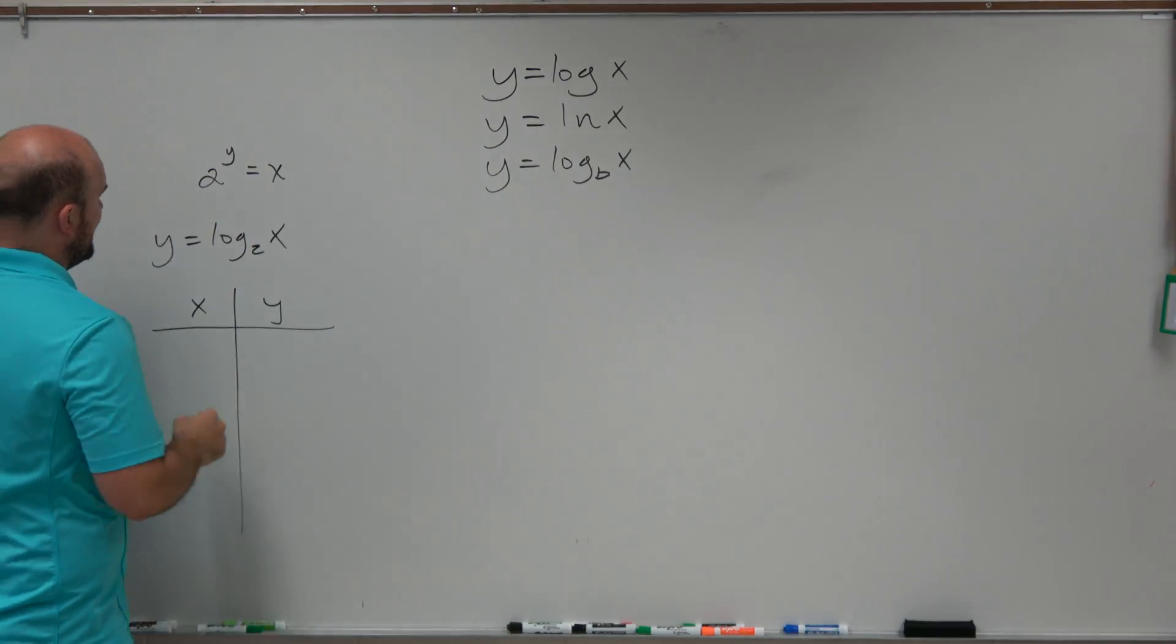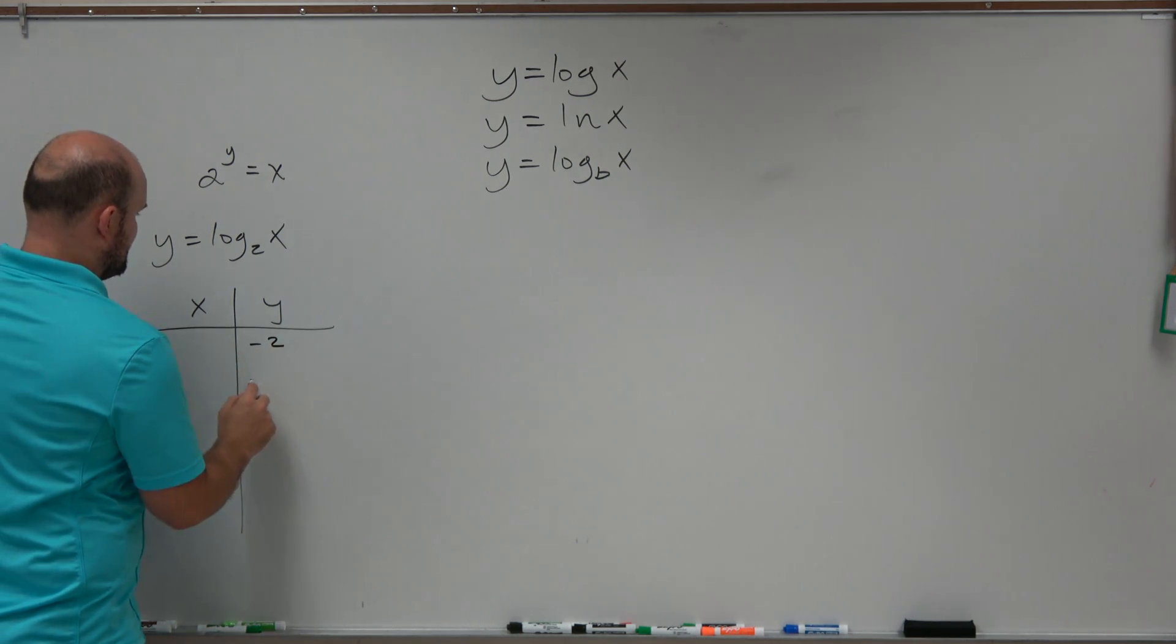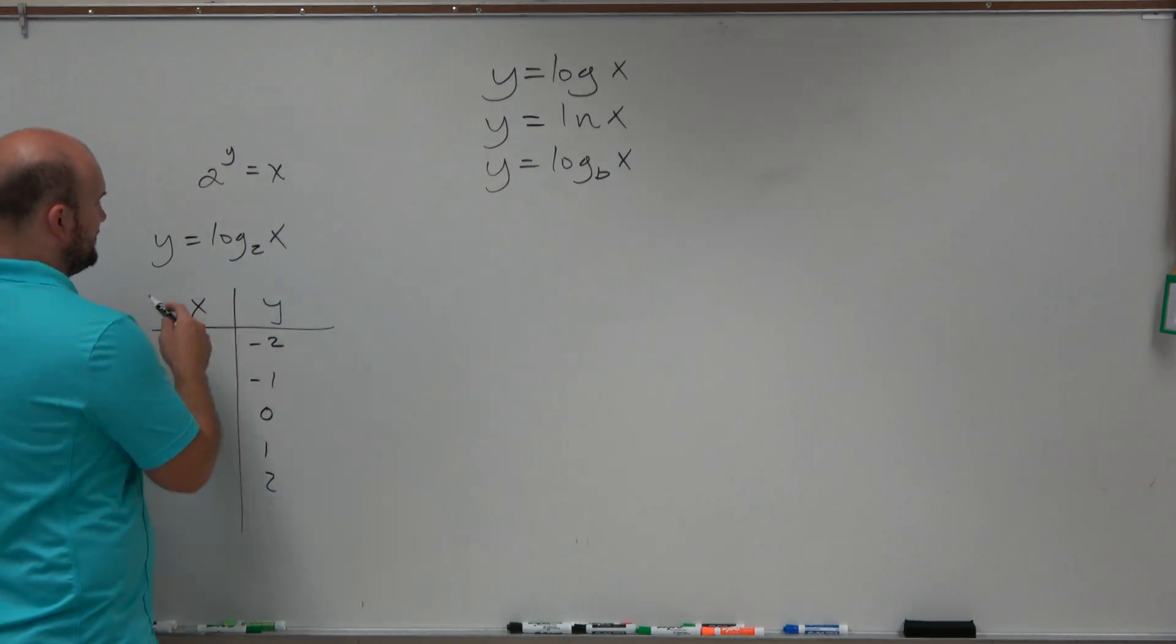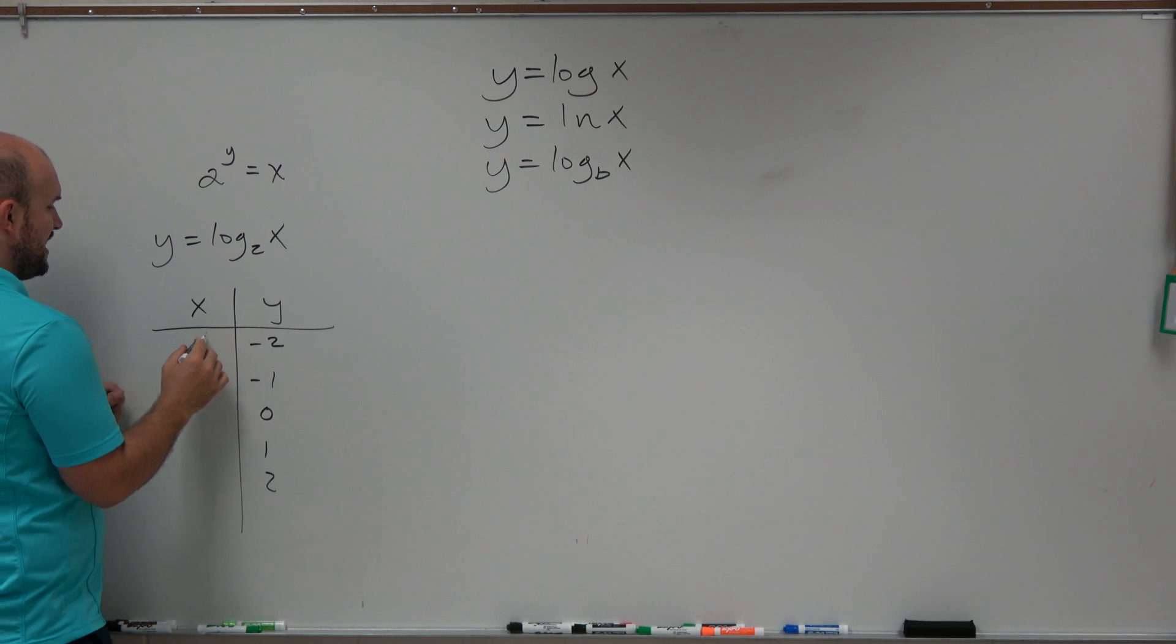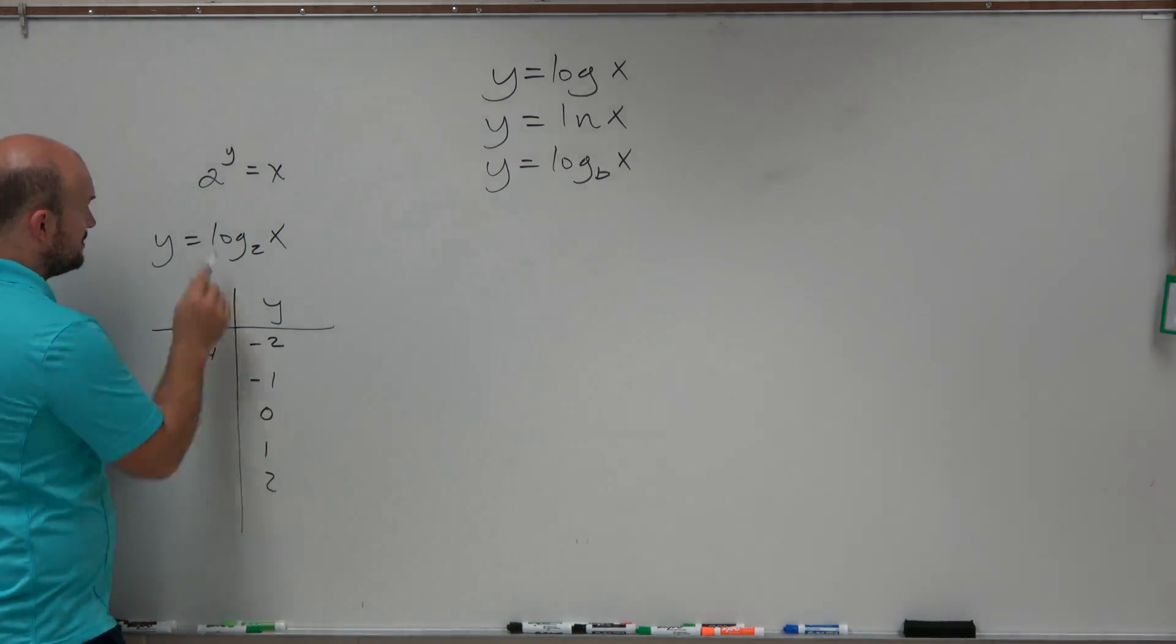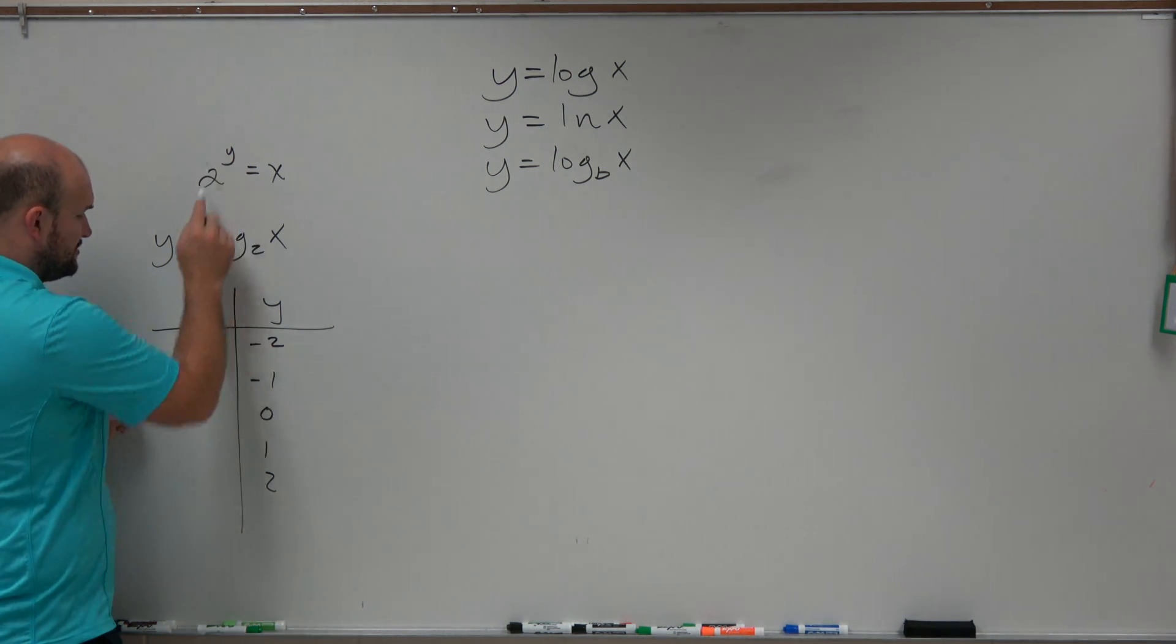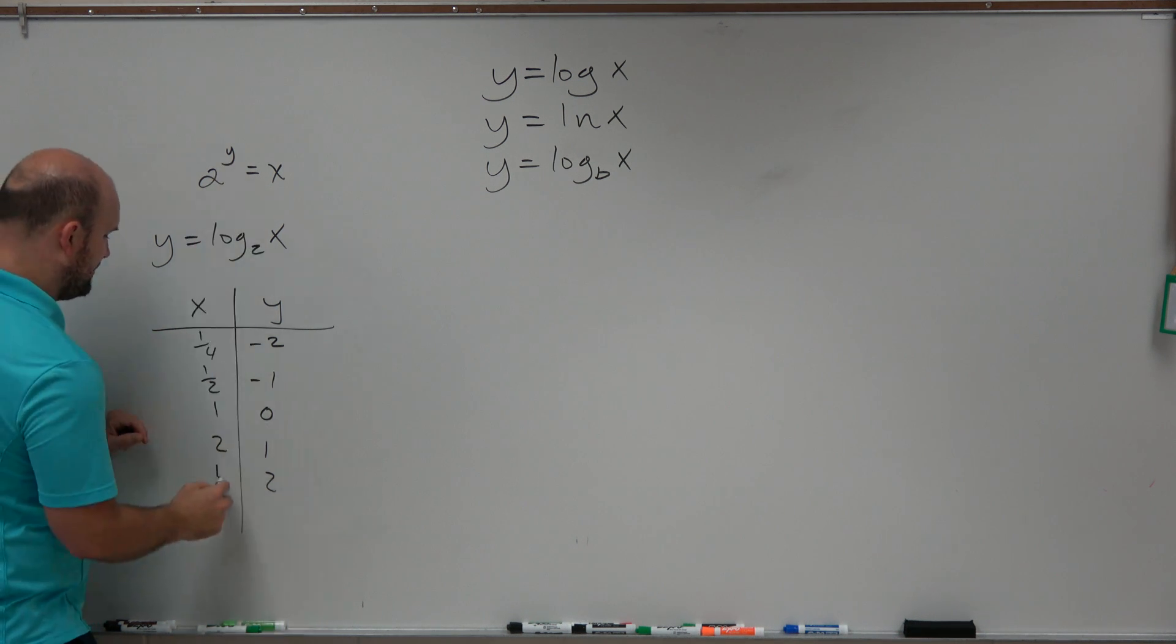So let's go ahead and raise y to the negative second, negative first, 0, 1, and 2. So I'm kind of working backwards here. If I rose 2 to the negative second power, that means I would have 1 fourth. If I raised 2 to the negative first power, that means I would have 1 half. 2 to the 0 power would be 1. 2 to the first power would be 2. And then 2 to the second power would be 4.